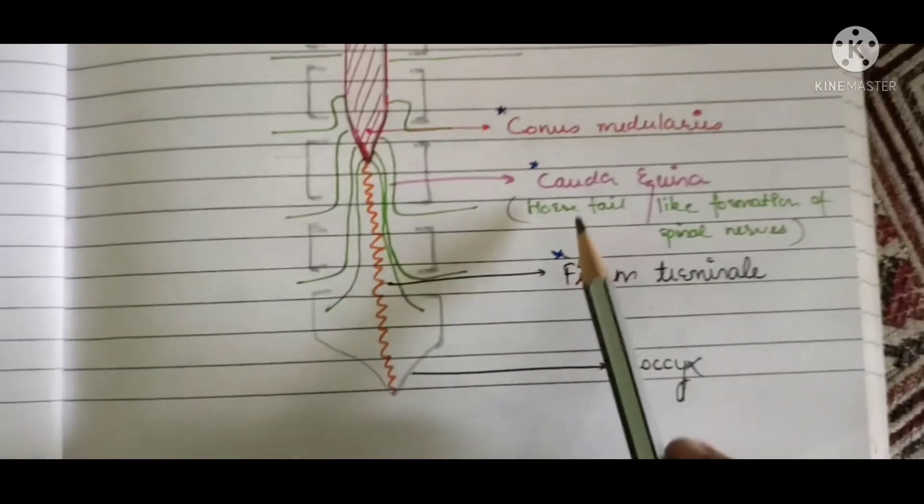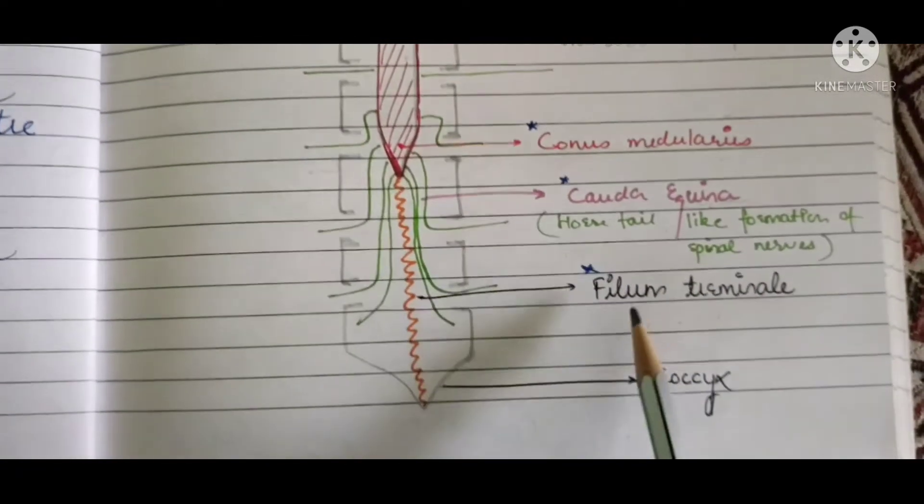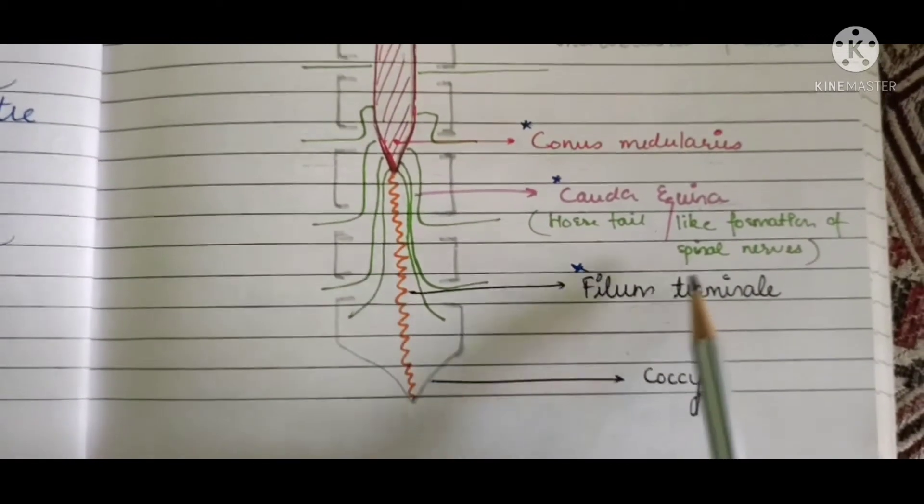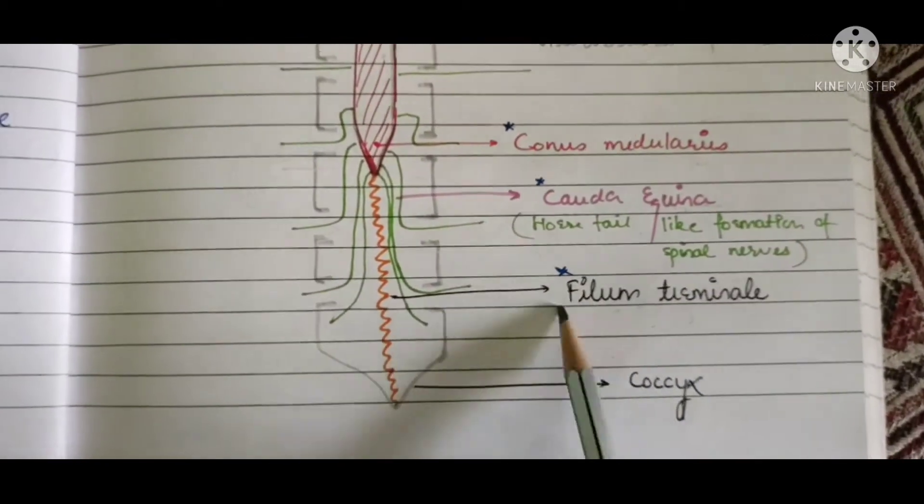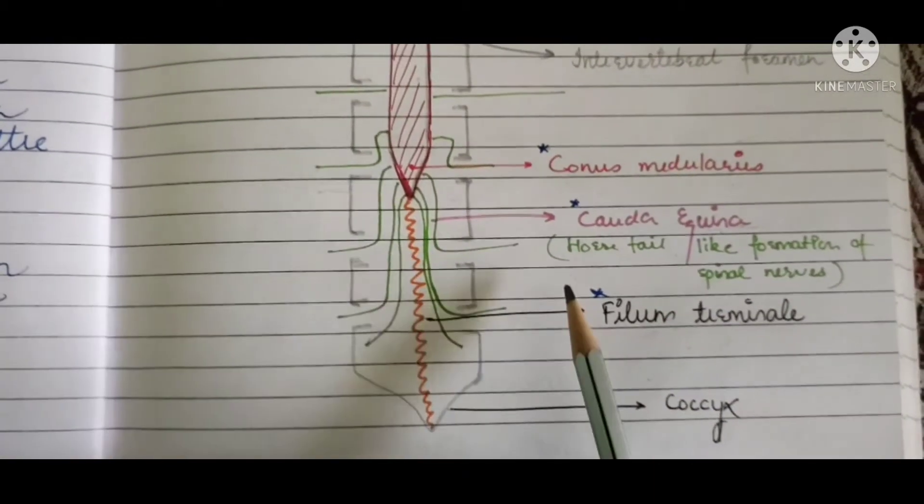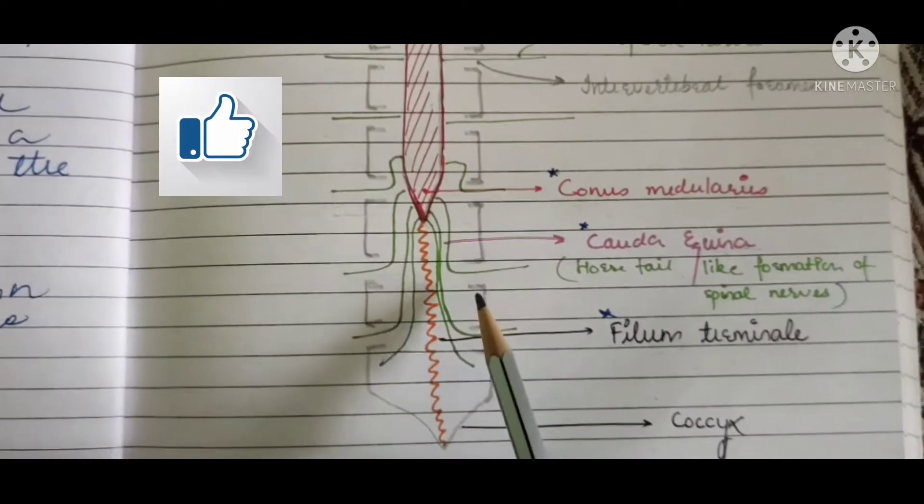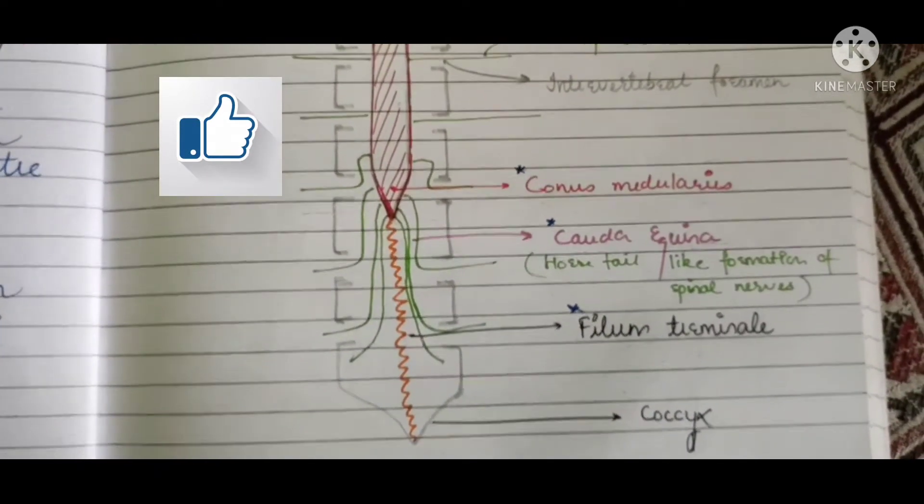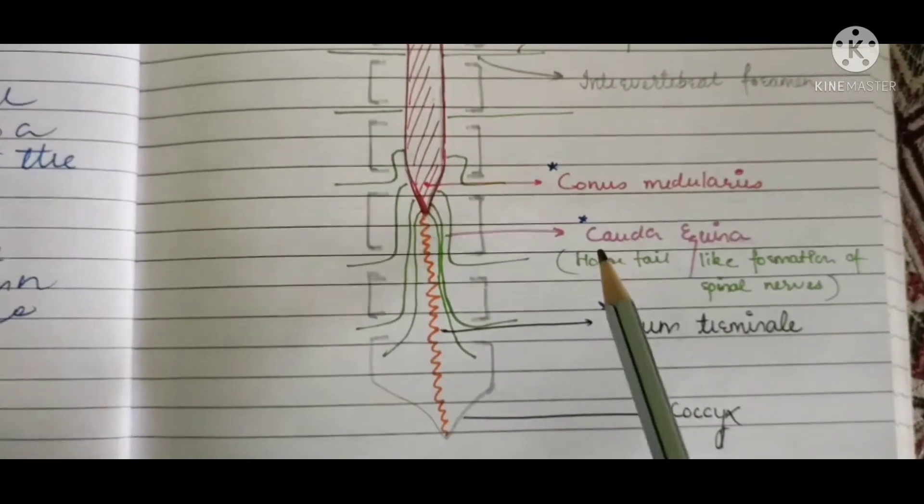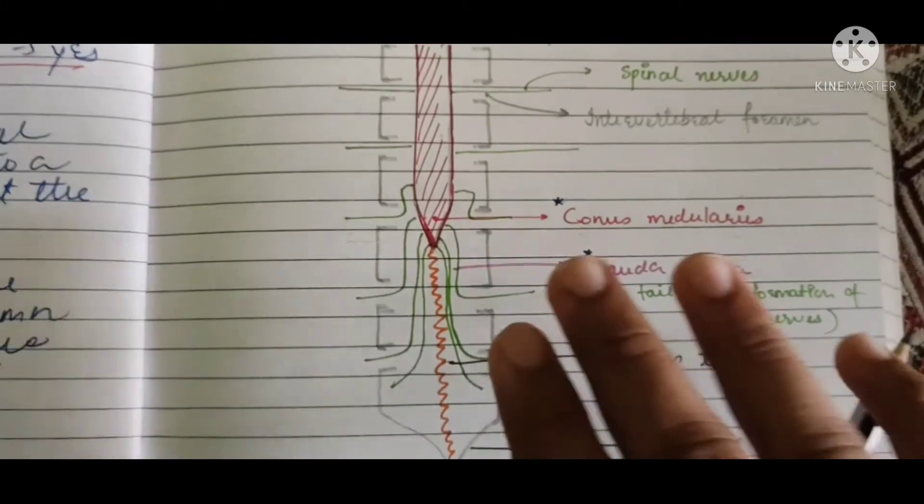So it is nothing else but the aggregation of the spinal nerves which is resembling the horse tail. So we completed with this terminology. Then we will come on to the filum terminale. Our next terminology is filum terminale. So what does this mean? It is nothing but just a connective tissue, a fibrous connective tissue which is the extension of the pia mater.